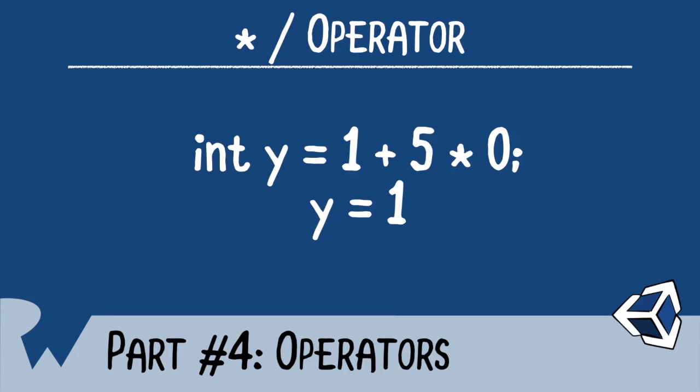Operators have precedents. Multiplication and division have higher precedents than addition or subtraction, so they are evaluated first. In this case, you multiply 5 times 0, and then you add 1.